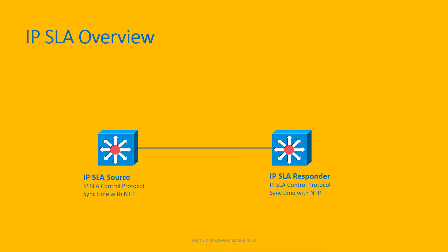In order to set up IP SLA, we need a device that acts as the IP SLA source. The IP SLA source device must support the IP SLA control protocol so that it can generate IP SLA test type traffic. The remote device is the IP SLA responder. The responder can be any IP device, but for certain test types, the responder must also support the IP SLA control protocol. To ensure correct timing information, it is recommended that both devices be configured to sync their time with an NTP server.